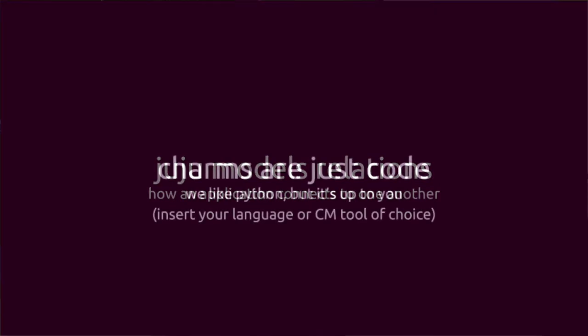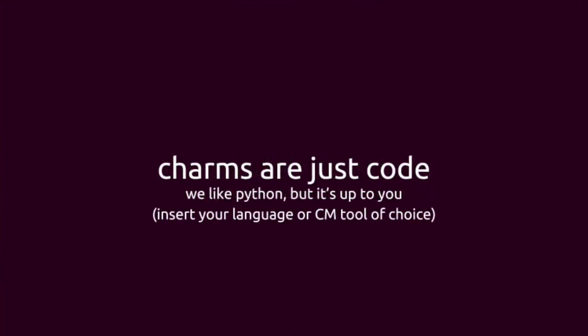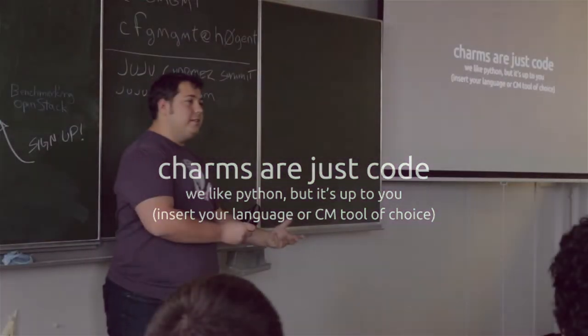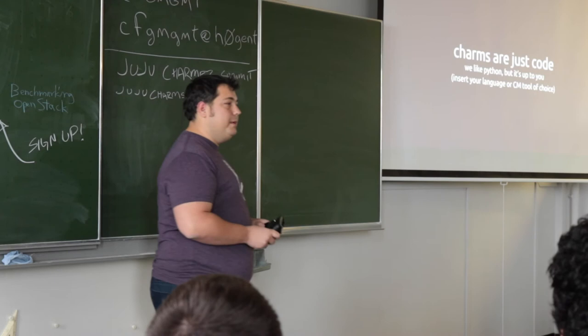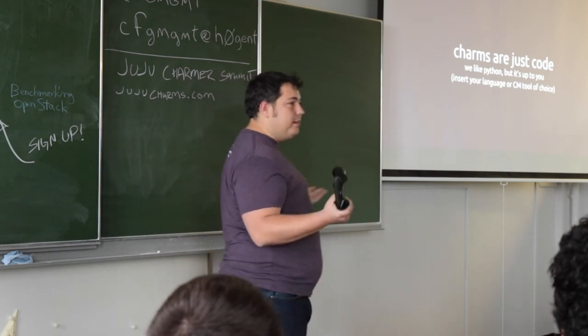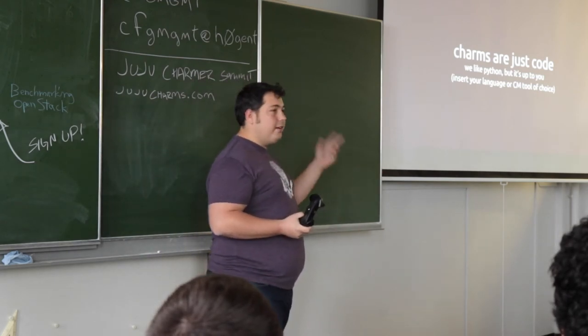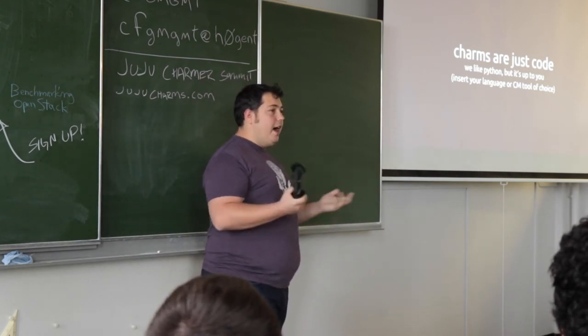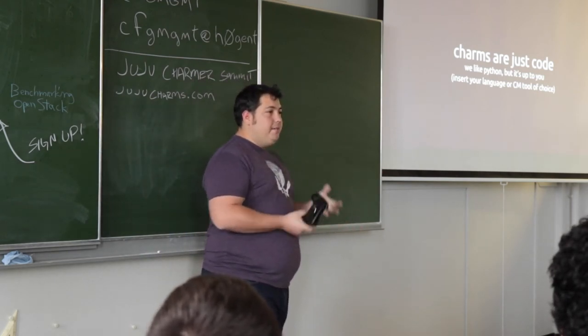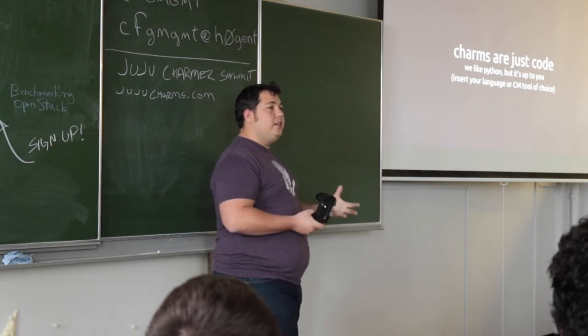Because charms are just a generic abstraction of resources, they can be in any language. The important thing is that charms are just code. By just being code, it could be Python, it could be Ruby, it could be Bash. But it could also be leveraging existing configuration management primitives — it could be Puppet, it could be Ansible, as we'll show later on this week. It could be anything you're currently using.